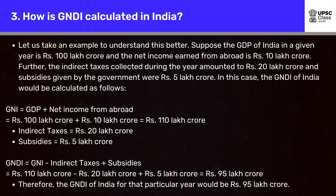Indirect Taxes = Rs. 20 lakh crore. Subsidies = Rs. 5 lakh crore. GNDI = GNI − Indirect Taxes + Subsidies = Rs. 110 lakh crore − Rs. 20 lakh crore + Rs. 5 lakh crore = Rs. 95 lakh crore. Therefore, the GNDI of India for that particular year would be Rs. 95 lakh crore.